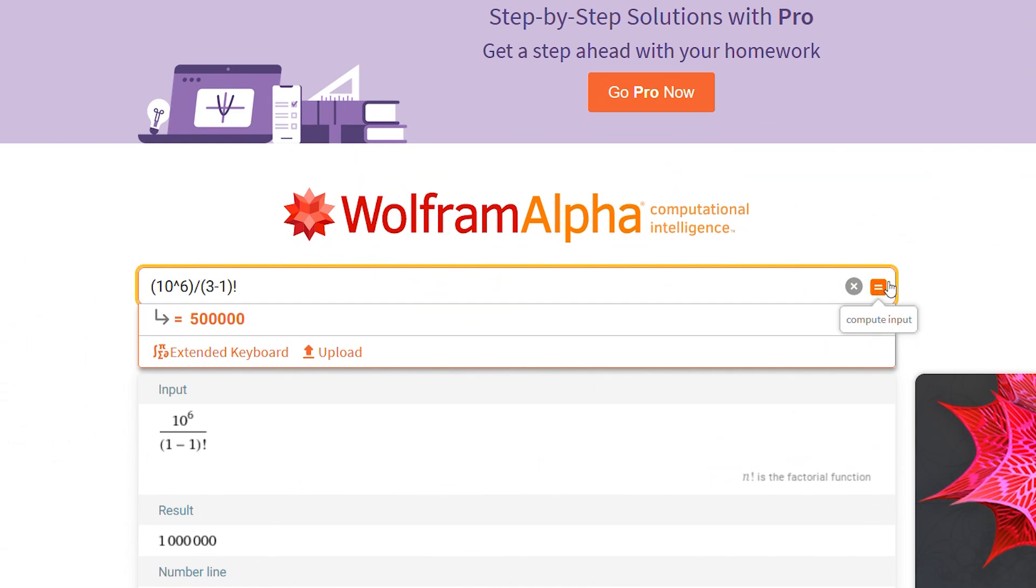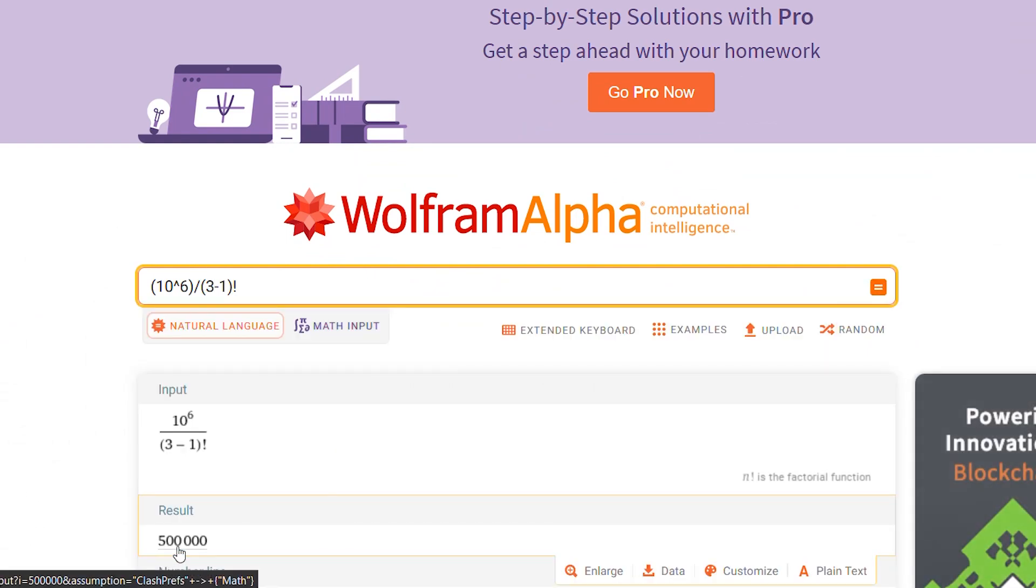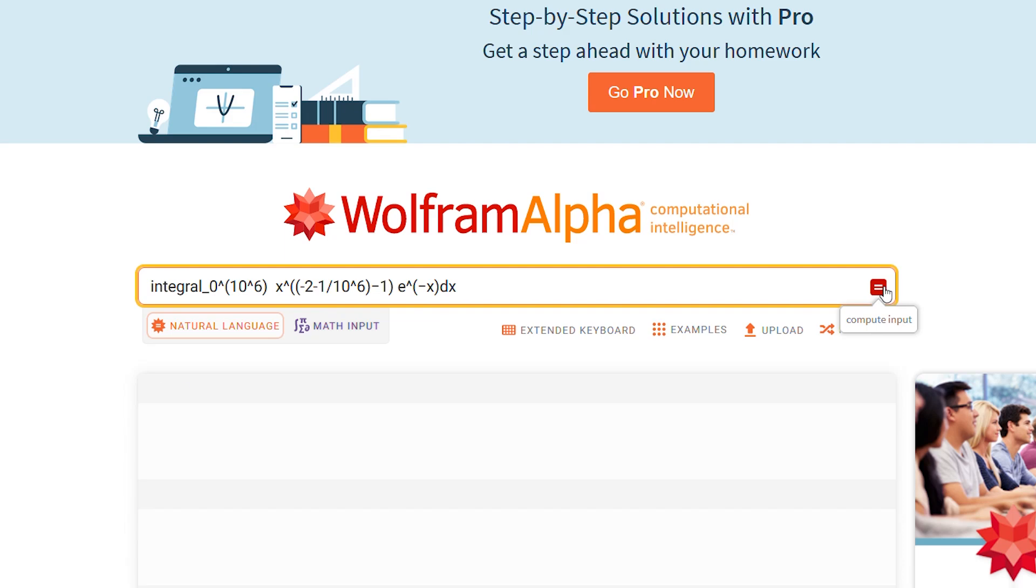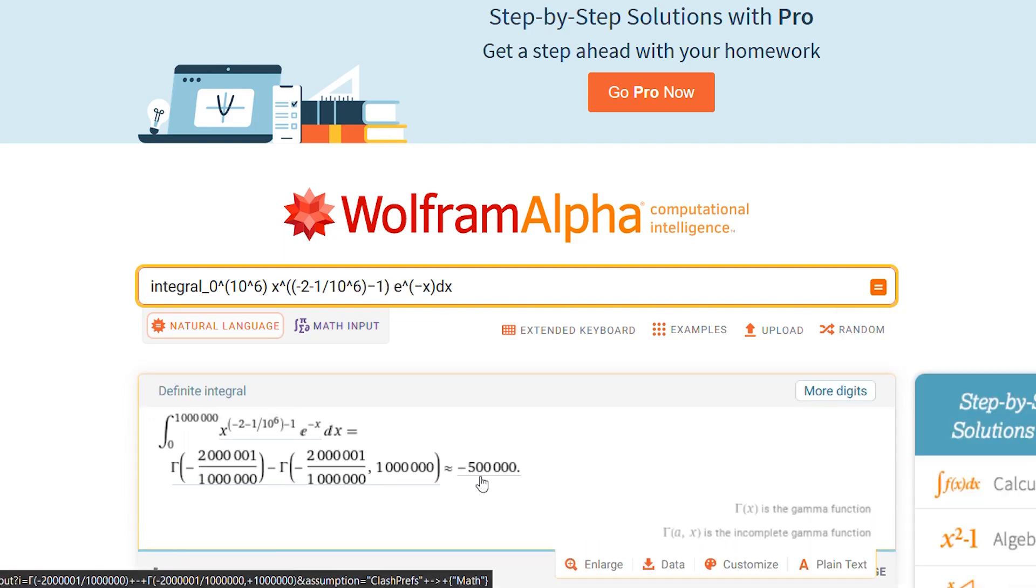Now minus 3 factorial is 500,000. But remember that negative sign will also be part of solution due to alternating sign property. And gamma function is also 500,000.